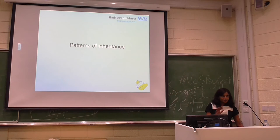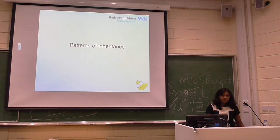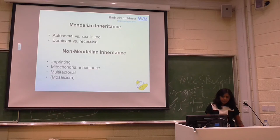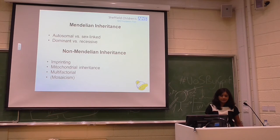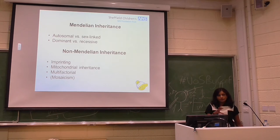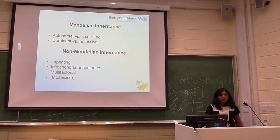Having talked about genes and chromosomes, and what alterations in DNA sequence might mean, I'm moving on to the different patterns of inheritance that we come across in clinical genetics practice. There's Mendelian inheritance, which is passed down the generations — we talk about autosomal and sex-linked, as well as dominant versus recessive inheritance patterns. And then there's non-Mendelian inheritance, which is perhaps slightly more important in the context of autism: imprinting, mitochondrial inheritance, multifactorial, and mosaicism.